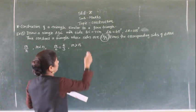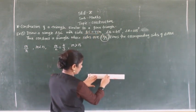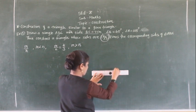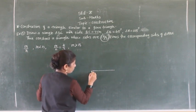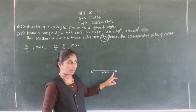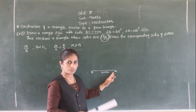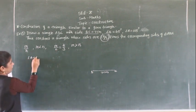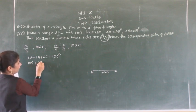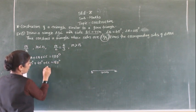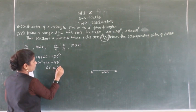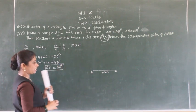First, draw segment BC equal to 7 cm. Now we are given angle B equals 45 degrees and angle A equals 105 degrees, but we need angle C. Since angle A plus angle B plus angle C equals 180 degrees — that is 105 plus 45 plus angle C equals 180 — angle C equals 30 degrees.